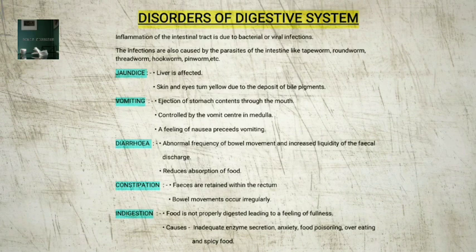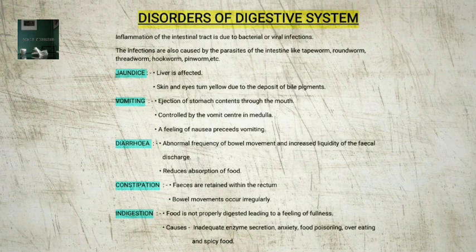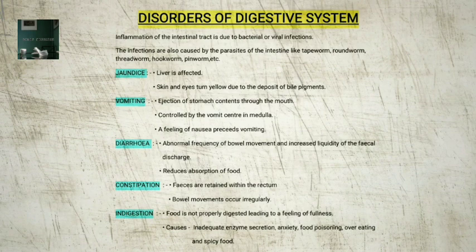Here are 5 of the most common disorders of the digestive system: 1. Jaundice — the liver is affected; skin and eyes turn yellow due to the deposit of bile pigments. 2. Vomiting — the ejection of stomach contents through the mouth; this reflex action is controlled by the vomit center in the medulla; a feeling of nausea precedes vomiting. 3. Diarrhea — the abnormal frequency of bowel movements and increased liquidity of faecal discharge; it reduces the absorption of food. 4. Constipation — the feces are retained within the rectum as the bowel movements occur irregularly. 5. Indigestion — food is not properly digested, leading to a feeling of fullness; causes include inadequate enzyme secretion, anxiety, food poisoning, overeating, and spicy food.